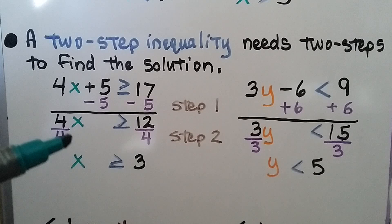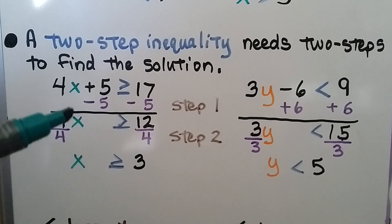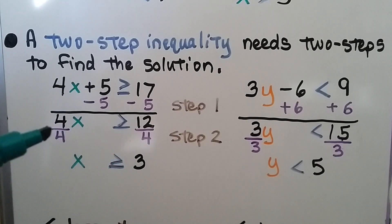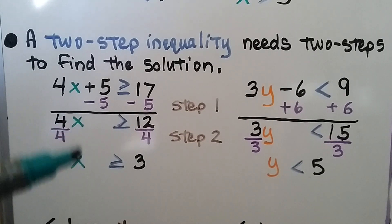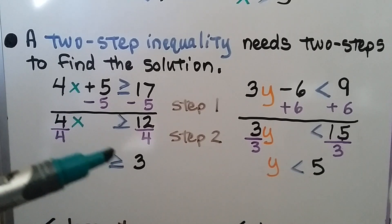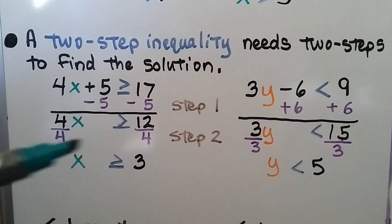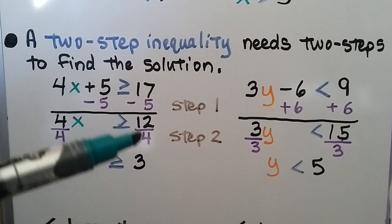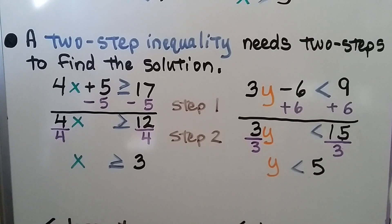The second step: because this is multiplication, we'll use division and divide both sides by the coefficient 4 to isolate x to one side of the inequality sign. When we do this, we get 1x on the left, and 12 divided by 4 is 3. So we know x is greater than or equal to 3.